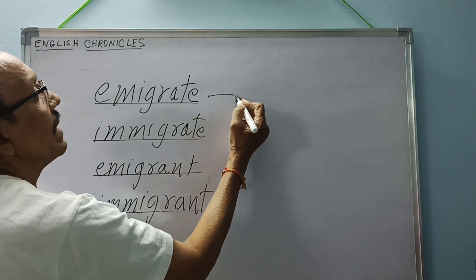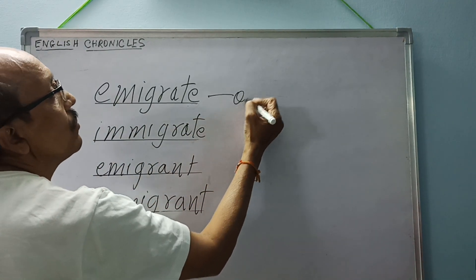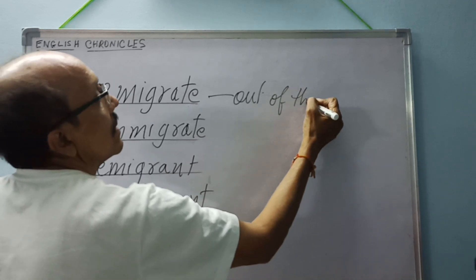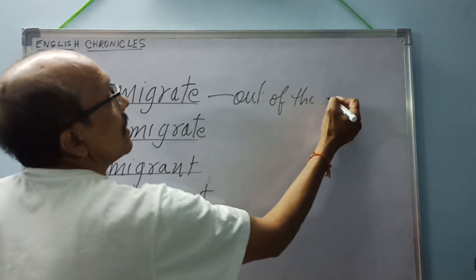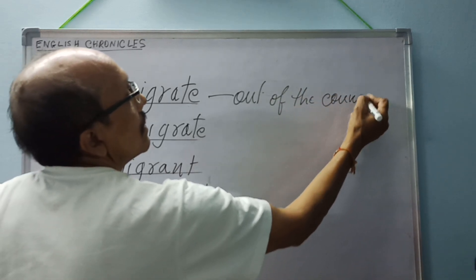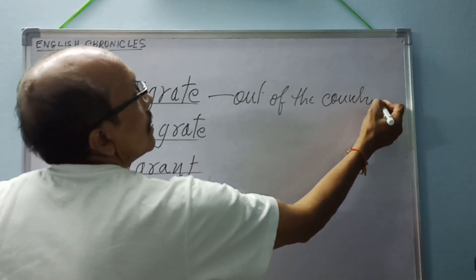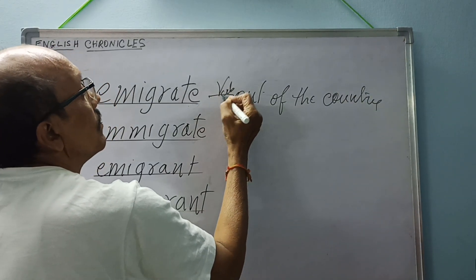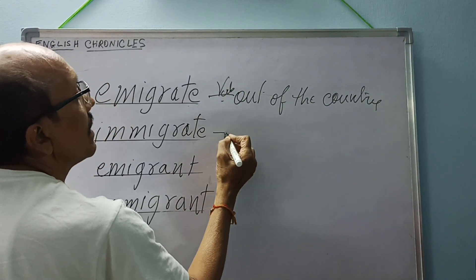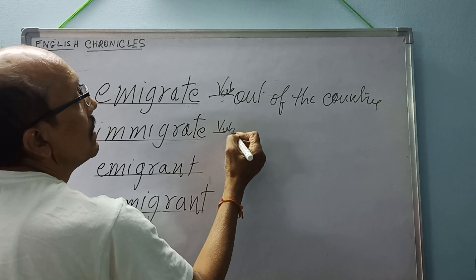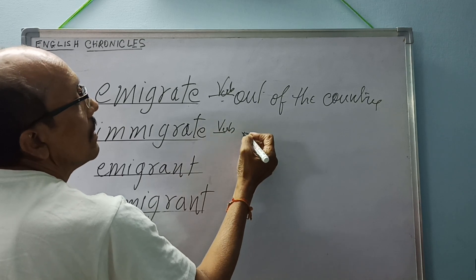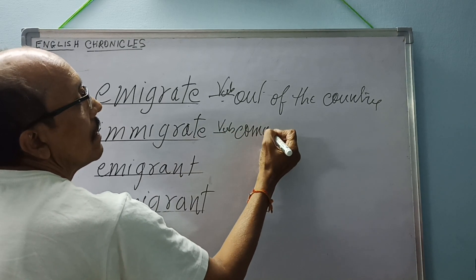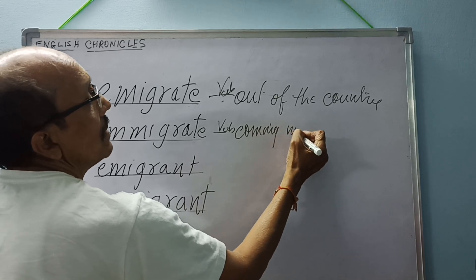Emigrate means out — out of the country. This is a verb. Immigrate is also a verb, meaning coming into the country.